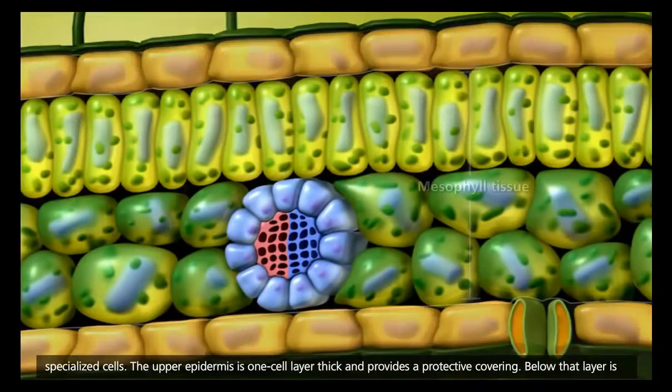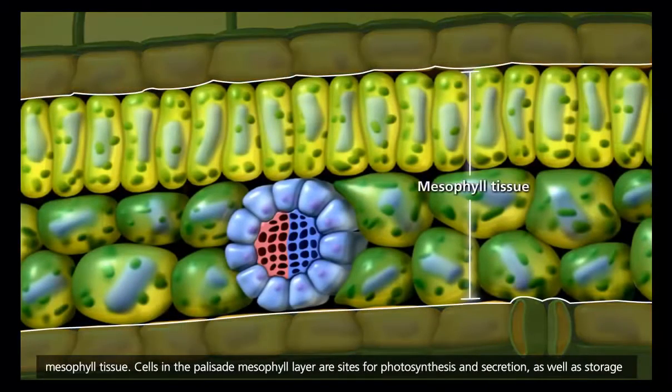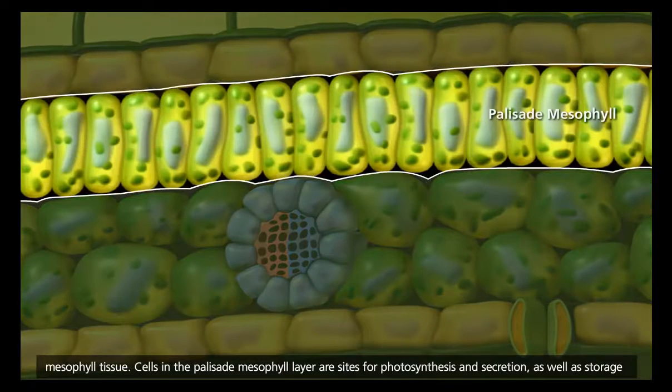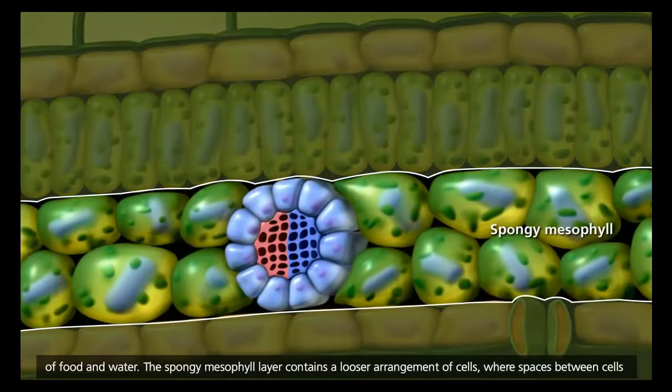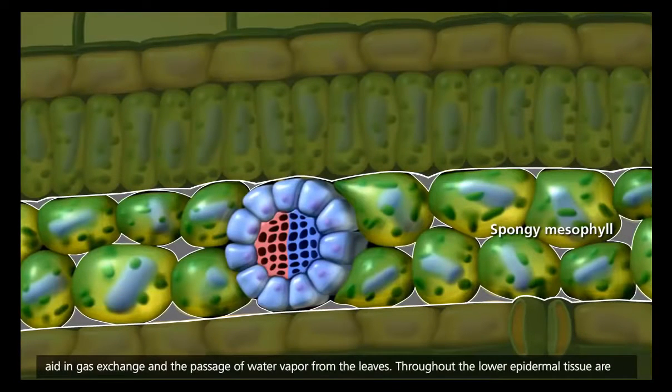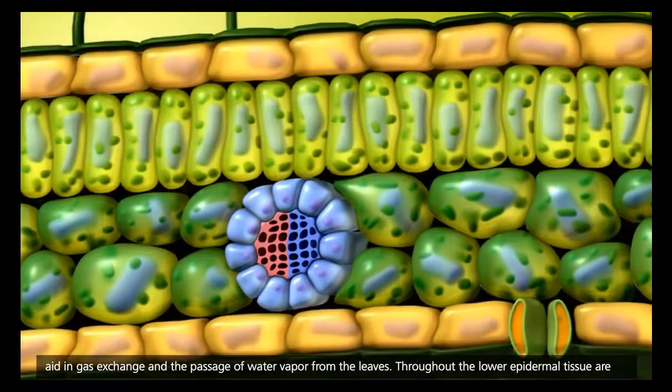Below that layer is mesophyll tissue. Cells in the palisade mesophyll layer are sites for photosynthesis and secretion, as well as storage of food and water. The spongy mesophyll layer contains a looser arrangement of cells, where spaces between cells aid in gas exchange and the passage of water vapor from the leaves.